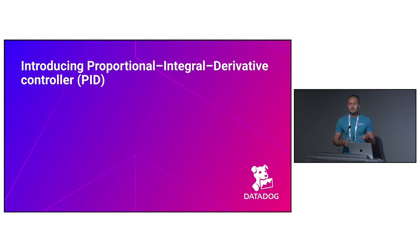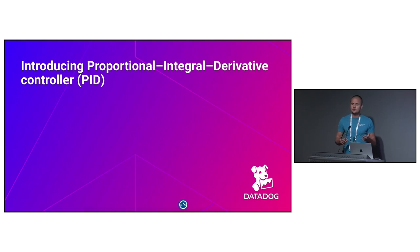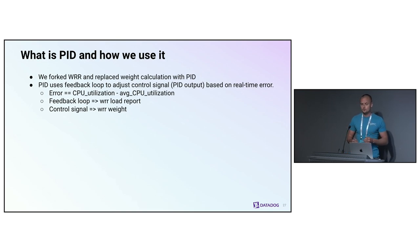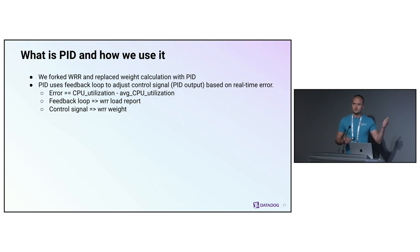All those conversations about deterministic subsetting and WRR happened exactly a year ago here during the last gRPC conf, and I was a bit upset because it looked like we didn't have a good path forward. So I started talking to different people and asking how they deal with subsetting in their infrastructure. One very interesting idea suggested was to use a proportional-integral-derivative controller, or PID for short, to mitigate the imbalance generated by random subsetting. What we did was fork the WRR load balancer and replace the weight generation part — which was using the cost-per-request function — with PID.